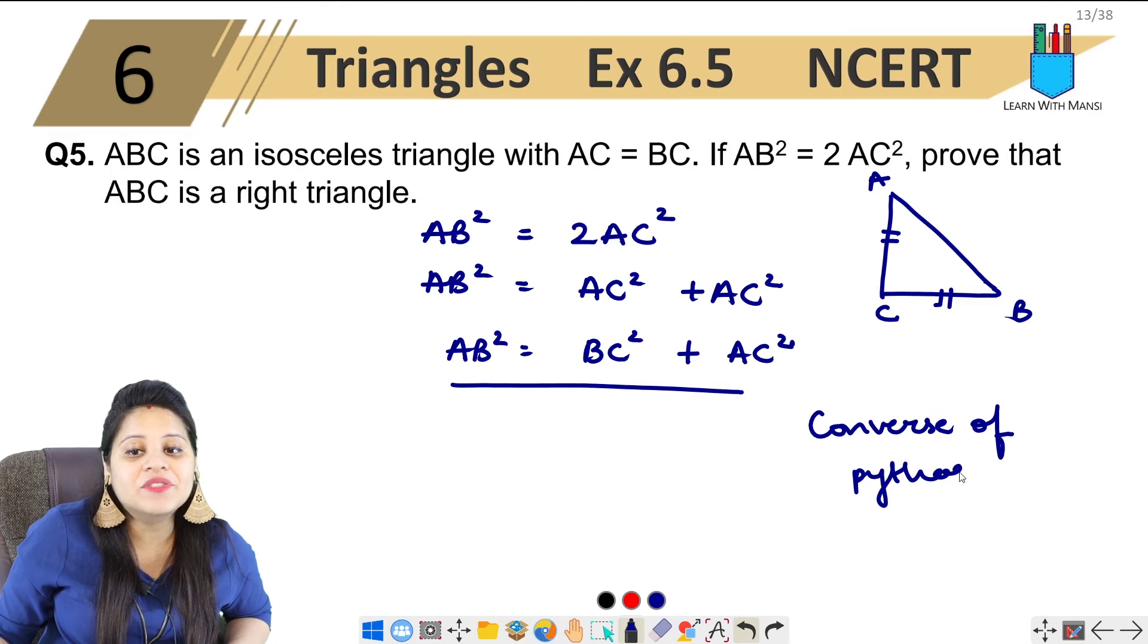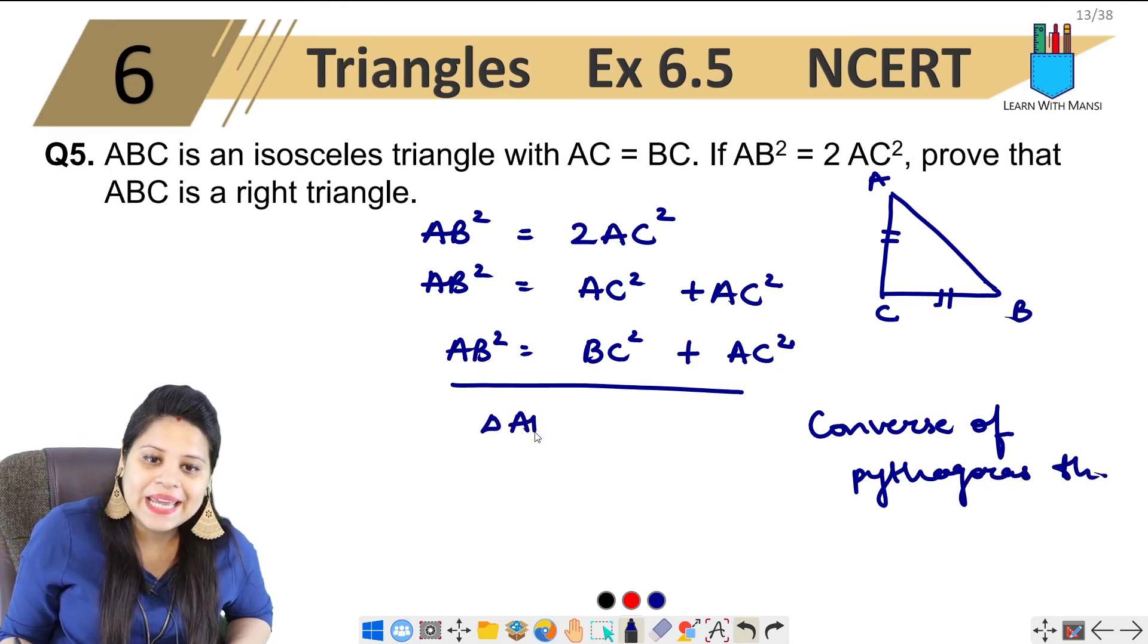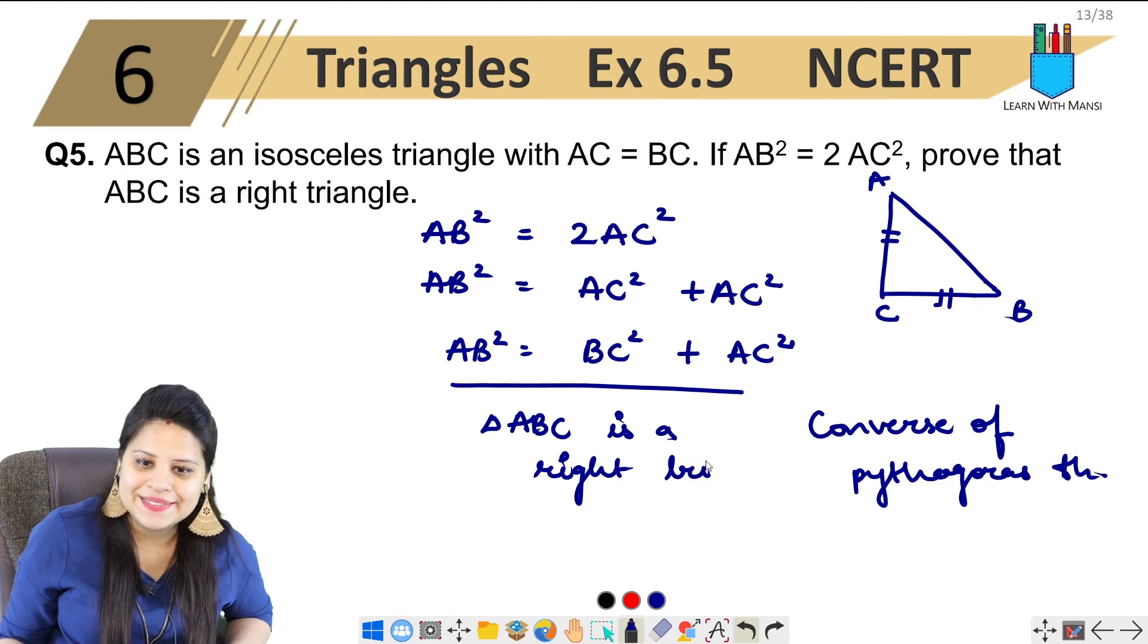So by Converse of Pythagoras theorem, I can say that triangle ABC is a right triangle. Okay, this is what we have to prove in the question.